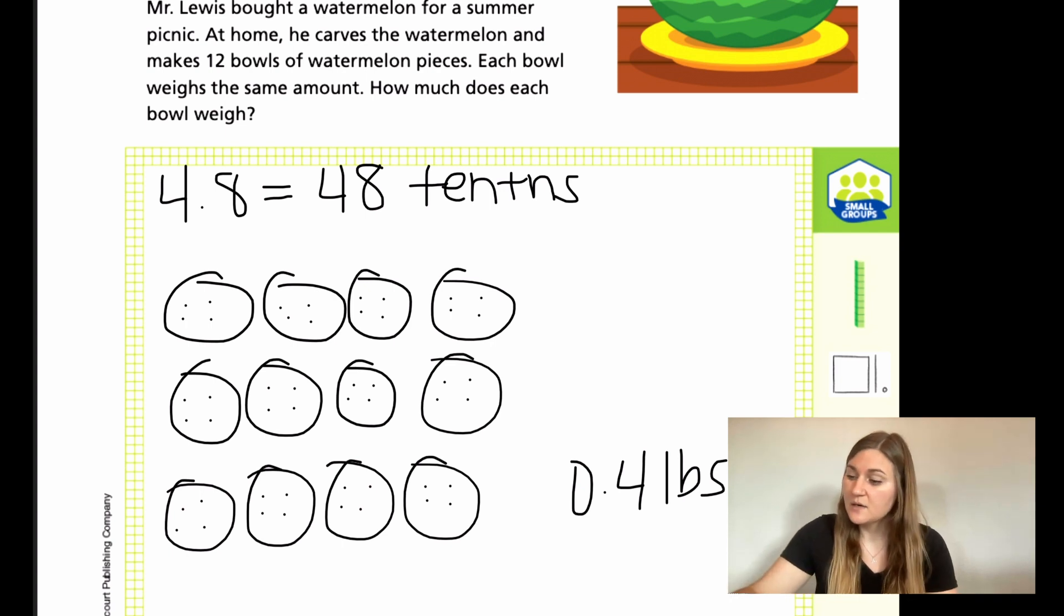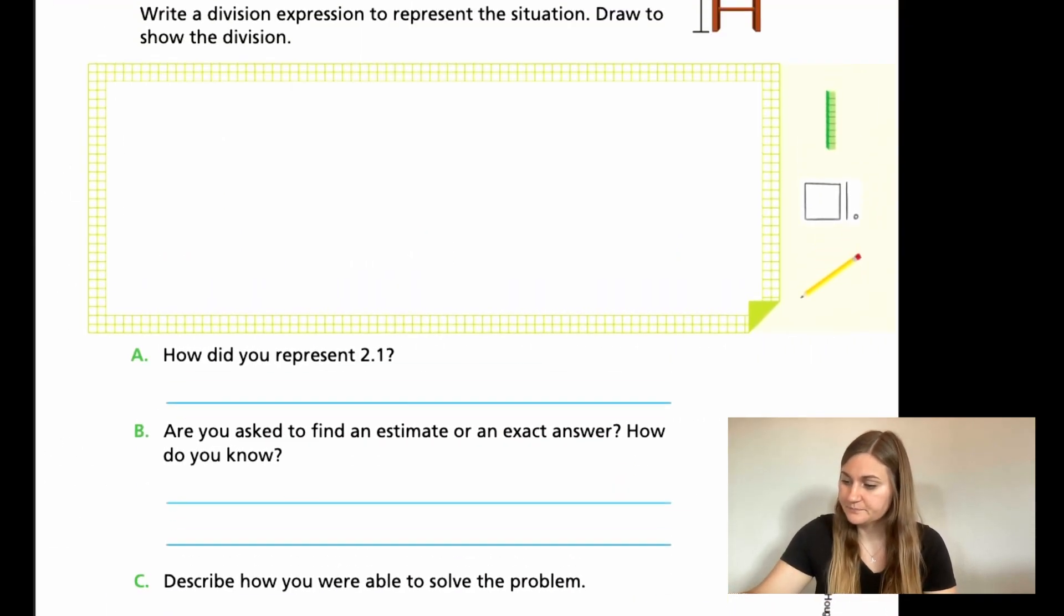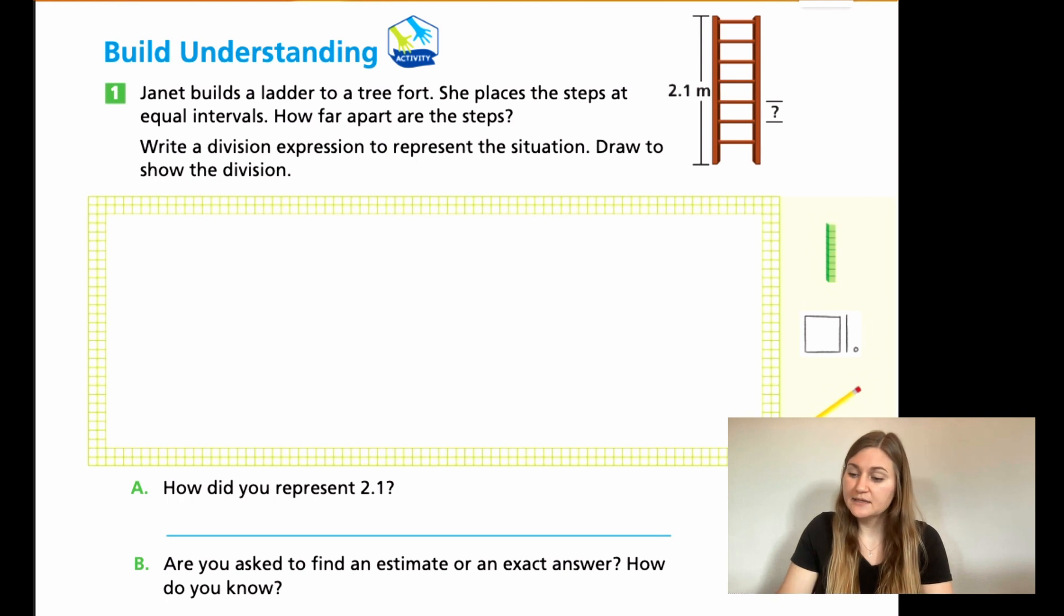Let's go ahead and flip the page. Number one, it says Janet builds a ladder to a tree fort. She places the steps at equal intervals. How far apart are the steps? Write a division expression to represent the situation and draw to show the division.